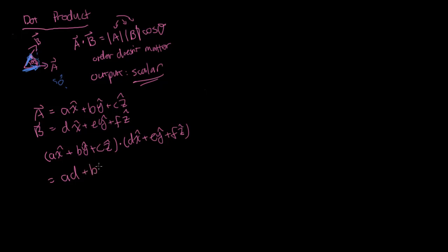By the same reasoning, when you multiply out the y components, everything is zero except the y-component dotted with y-component, giving B times E, and y-hat dot y-hat equals one. Same for z: you get C times F. So the algebraic method is simply: multiply the individual corresponding components together and sum all of those results. That final scalar number is your dot product.